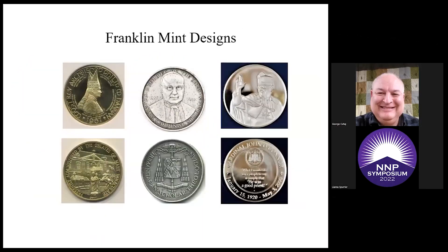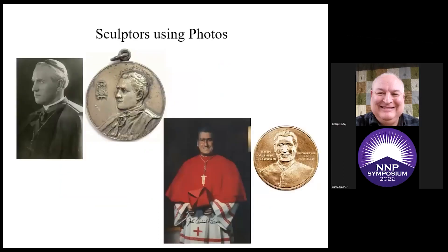In the 1960s, Frank Lament got into the coin and medal game, and Gilroy Roberts designed the Archbishop Hannon and Cardinal Spellman medals, as well as an unknown artist for the Death Commemorative. Very often, the person on the medal doesn't have time to sit for a sculptor to do a portrait, so photographs are provided — sometimes just a few photographs. These photos match fairly close for the medals honoring Cardinal Hayes, and on the right, the Congressional Medal for Cardinal O'Connor.